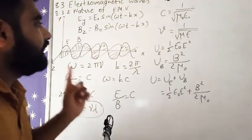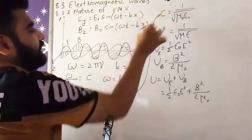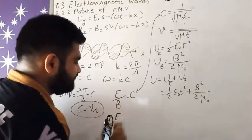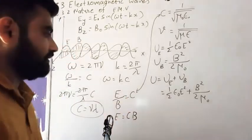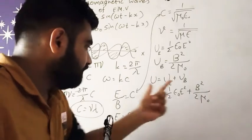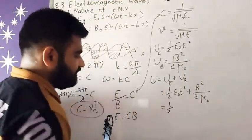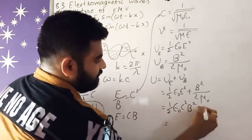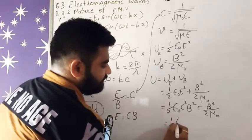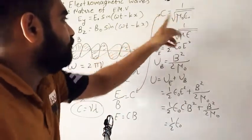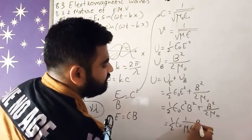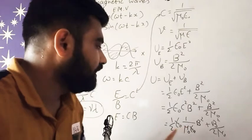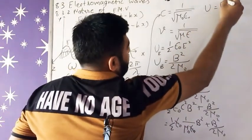C ki doosri bhi formula hai. So suppose ke mujhe E ko subject banana hai. Yaha par E ko main subject bana doon, to E = c × B ho jayega. So by putting this formula here, so I get ½ε₀(c²B²). C² ko I can write as 1/(μ₀ε₀) × B². ε₀ will be cancelled out. So B²/2μ₀. So dekhe hai, dono hi term same ho gaye. So I can write total U = B²/μ₀.